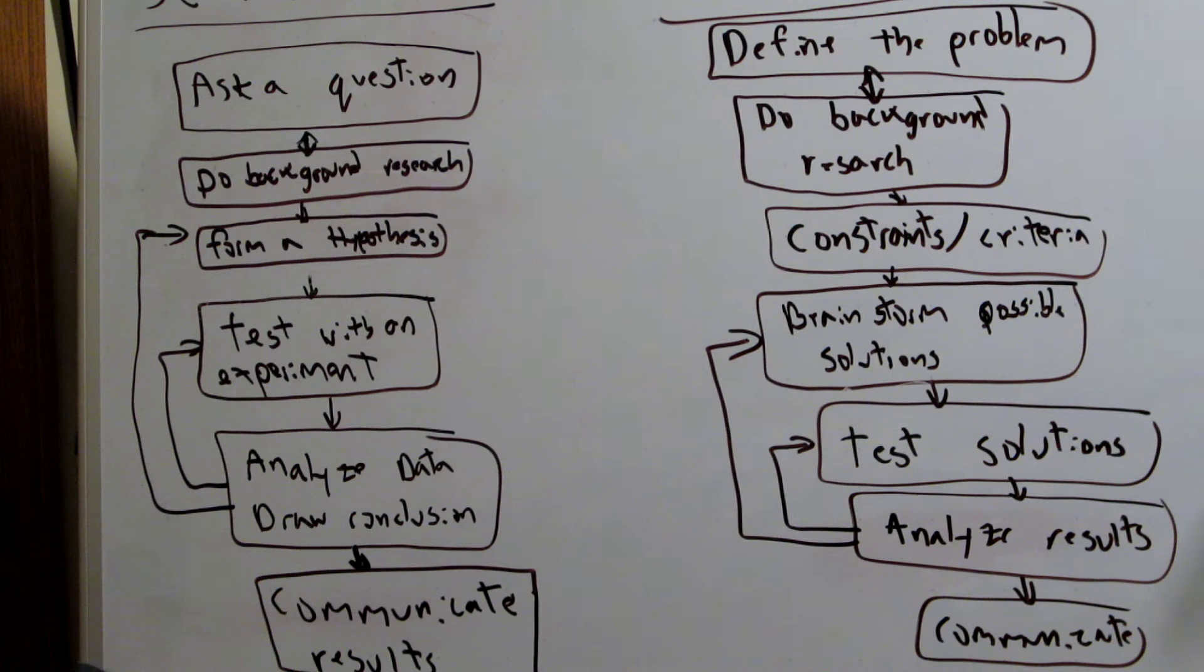Next is the engineering design process. This one, just like the scientific method, instead of asking a question, you're going to define a problem. So that's not too different, it's pretty much about the same. And the next step below, doing some background research, is about the same. So you're going to do some research about the problem so you have a better foundation before you go into anything else in the process.